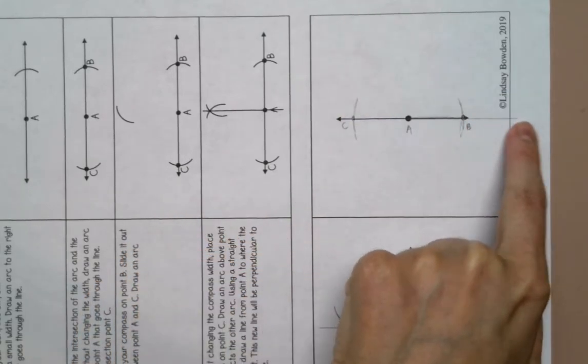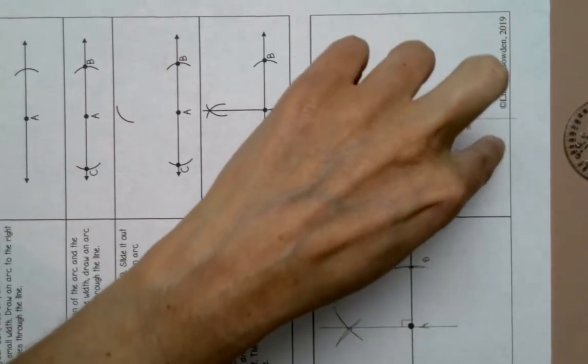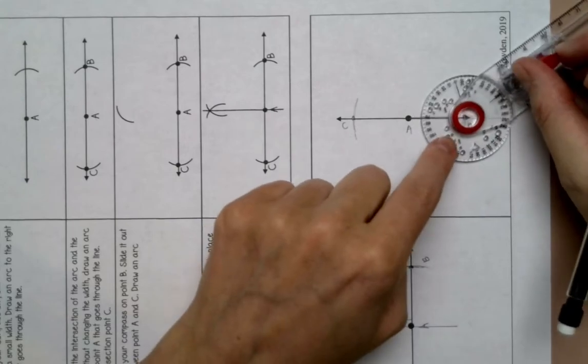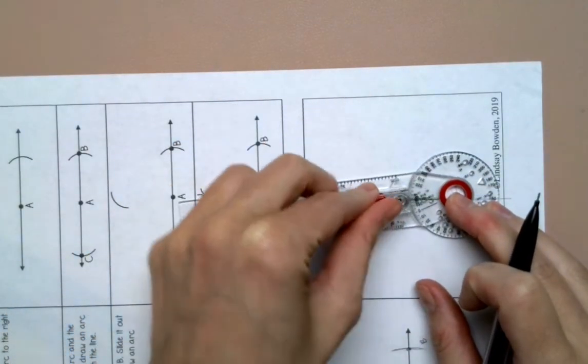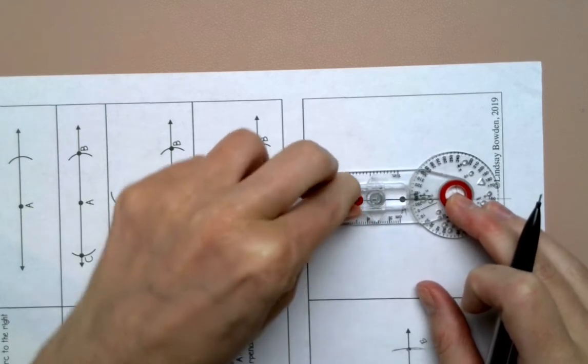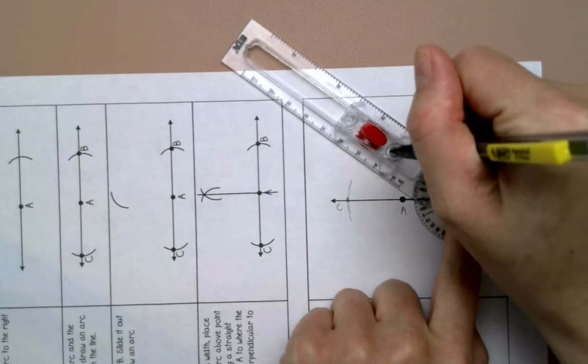Now I actually didn't have to extend it out, but if your compass was a larger width then it would have gone over the line. Alright, so now I'm going to put my point on B and I'm going to extend my compass out between A and C and lock it. And I'm going to draw an arc above A.